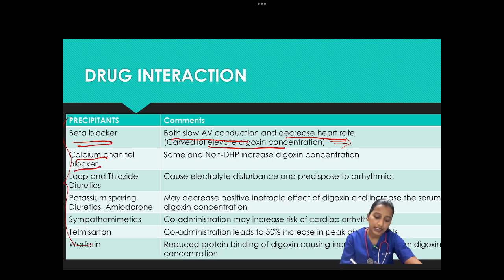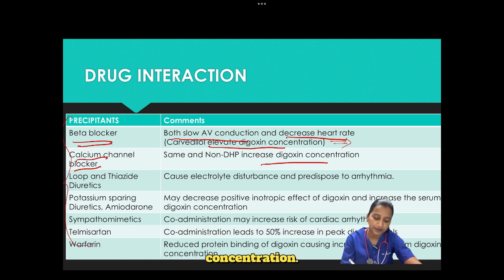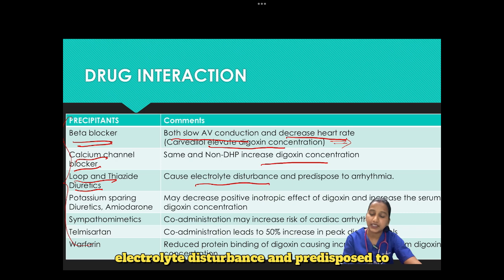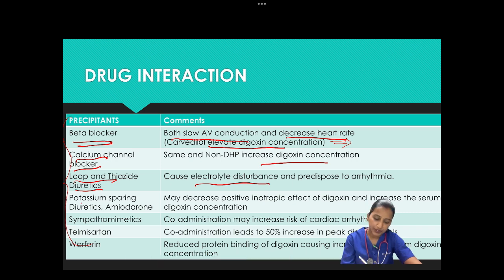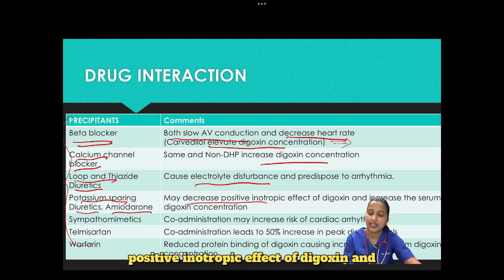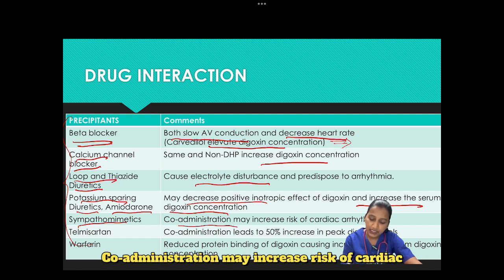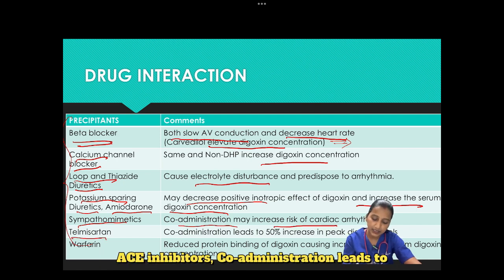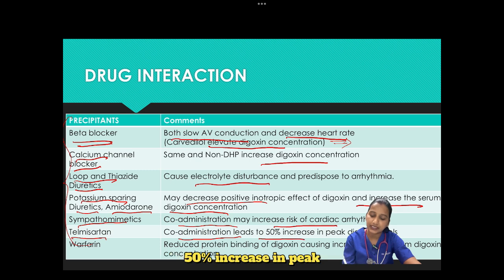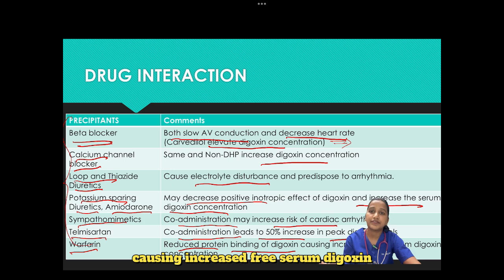Loop and thiazide diuretics cause electrolyte disturbances and predispose to arrhythmia. Potassium-sparing diuretics and amiodarone may decrease the positive inotropic effect of digoxin and increase serum digoxin concentration. Sympathomimetics like epinephrine and dopamine co-administration may increase risk of cardiac arrhythmia. ACE inhibitors co-administration leads to a 50% increase in peak digoxin level. Warfarin reduces protein binding of digoxin, causing increased free serum digoxin concentration.